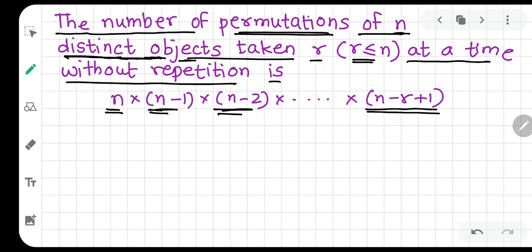Obviously r will be equal to or less than n. If you have 10 things, you can arrange 10 or 9. Repetition is not allowed. We have n objects, and we have places: first place, second place, third place, and rth place.